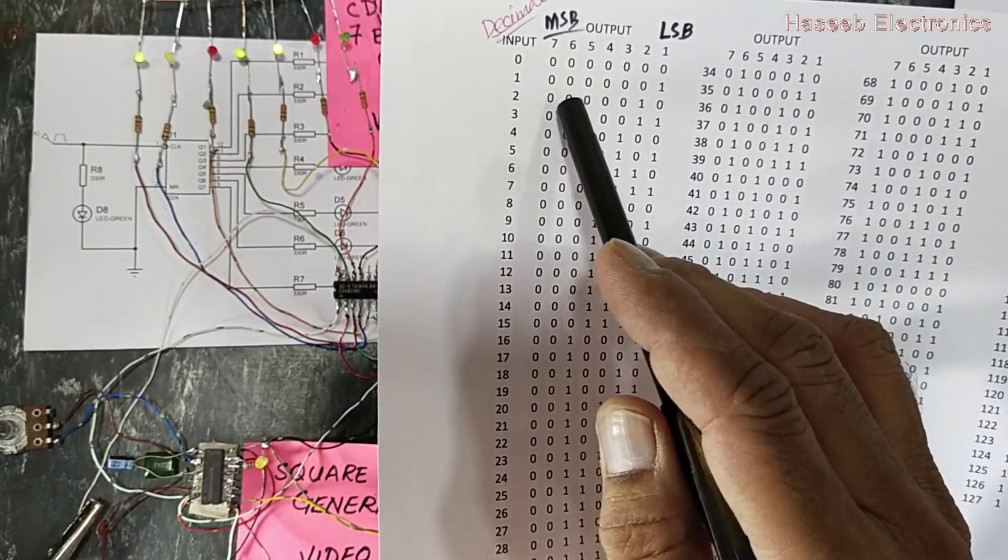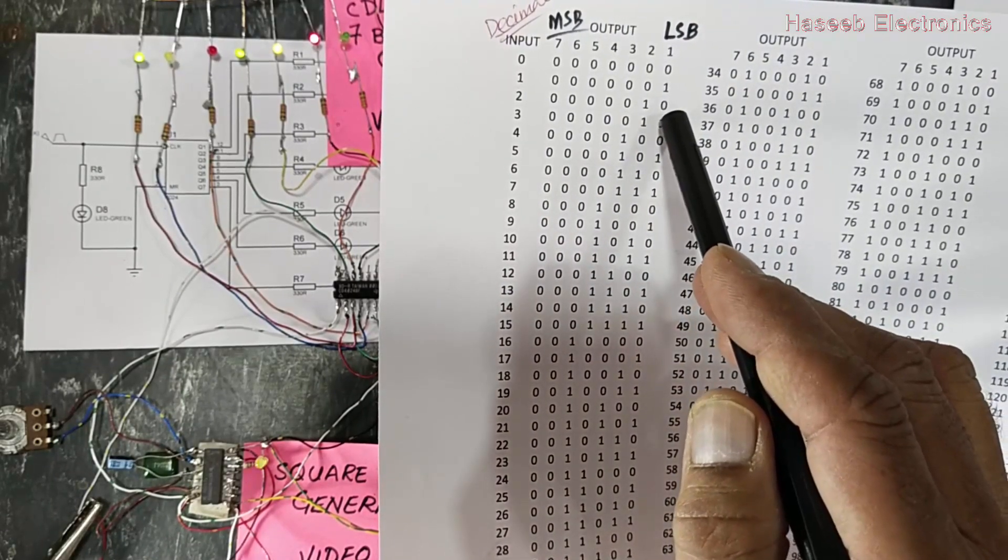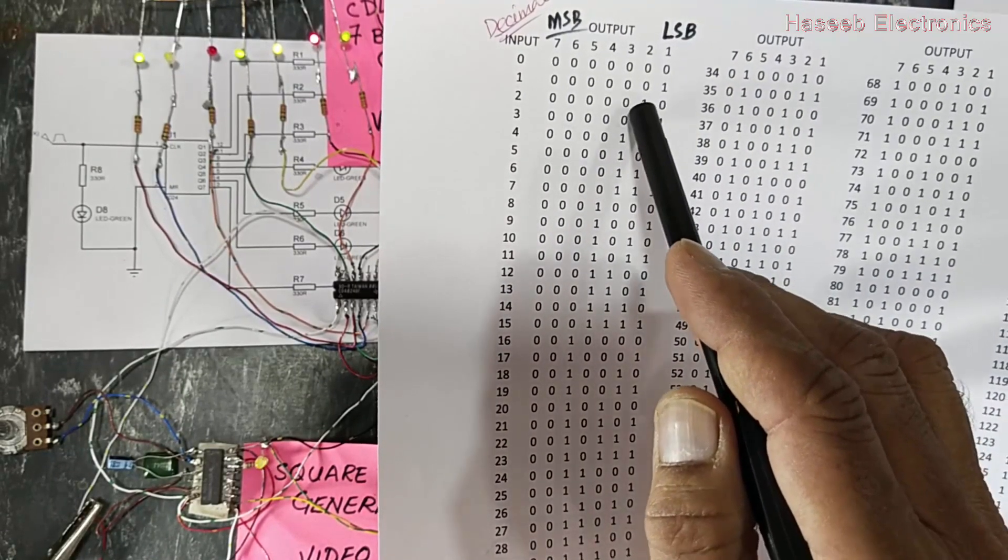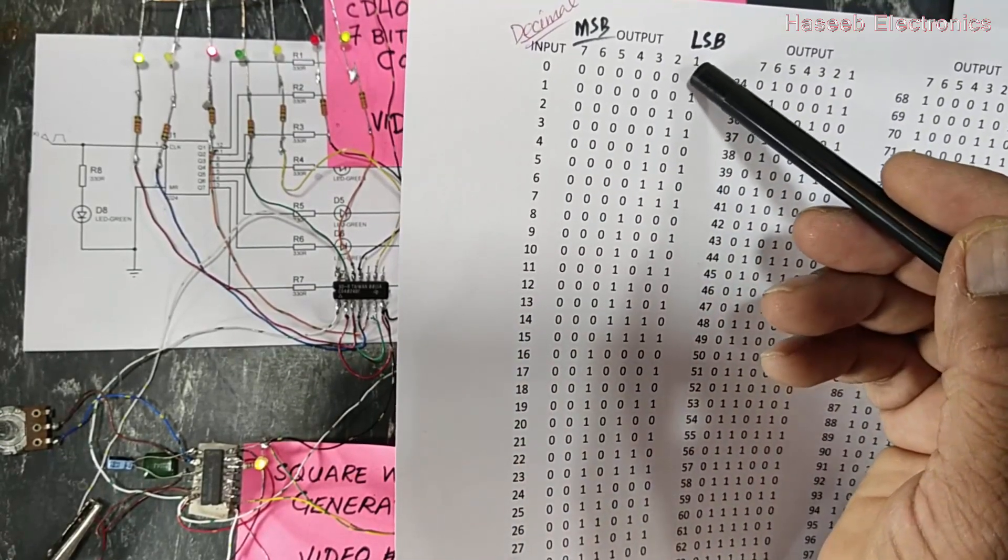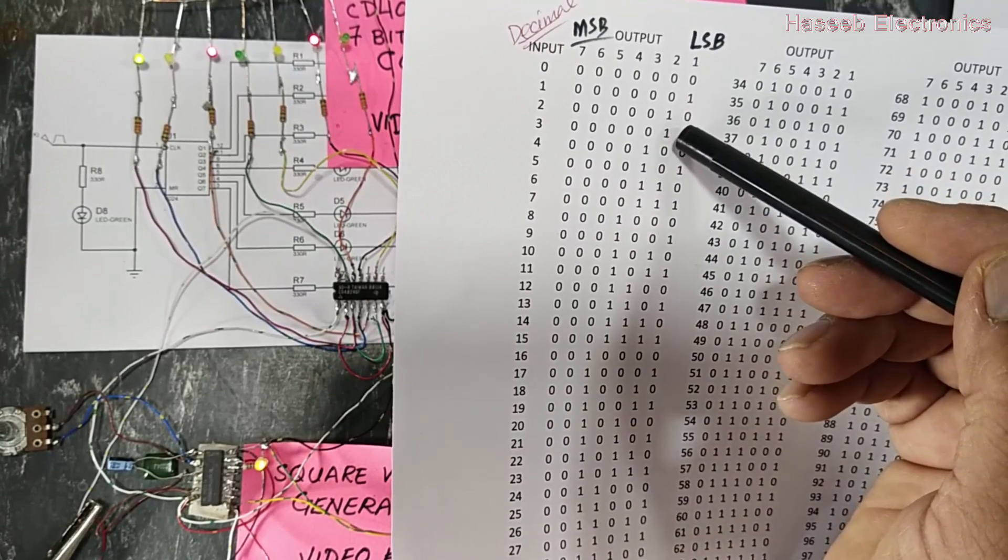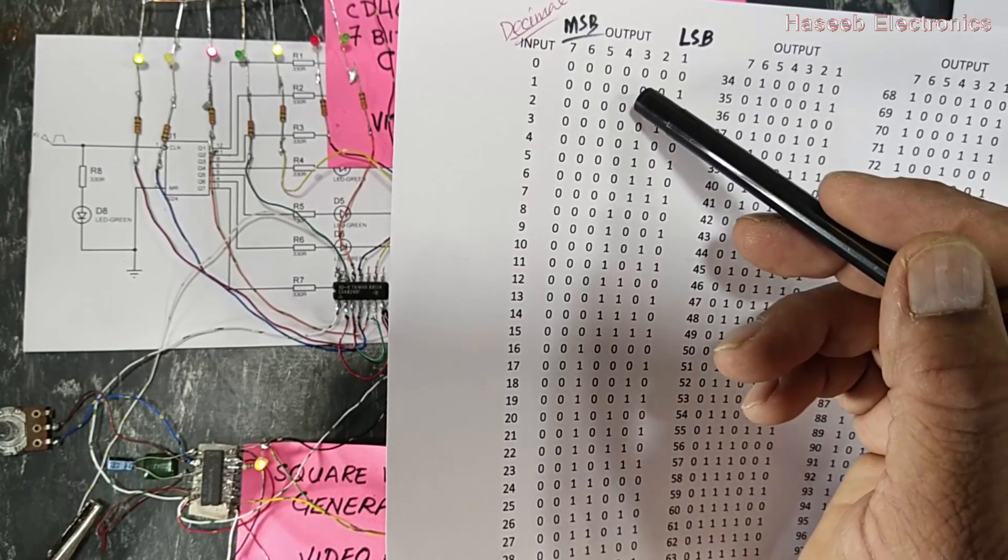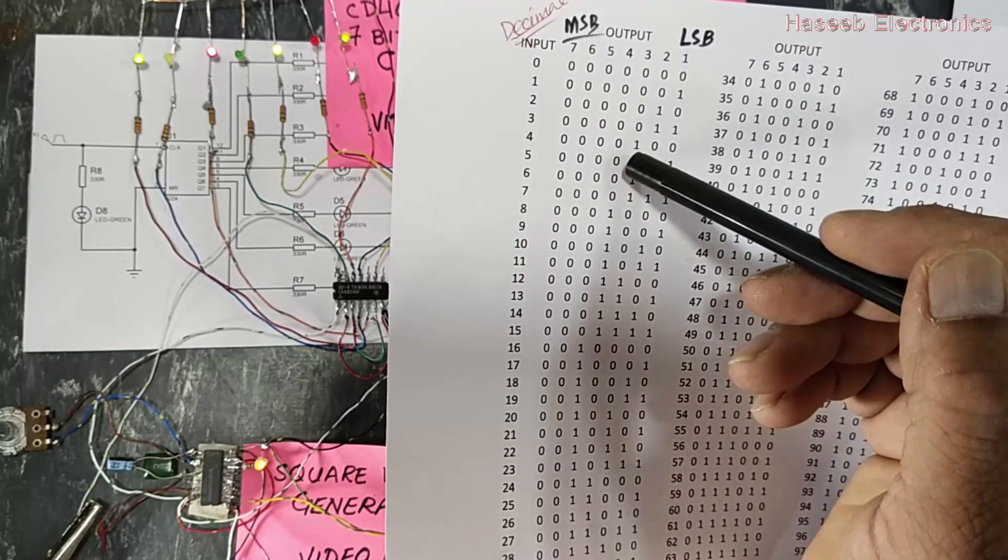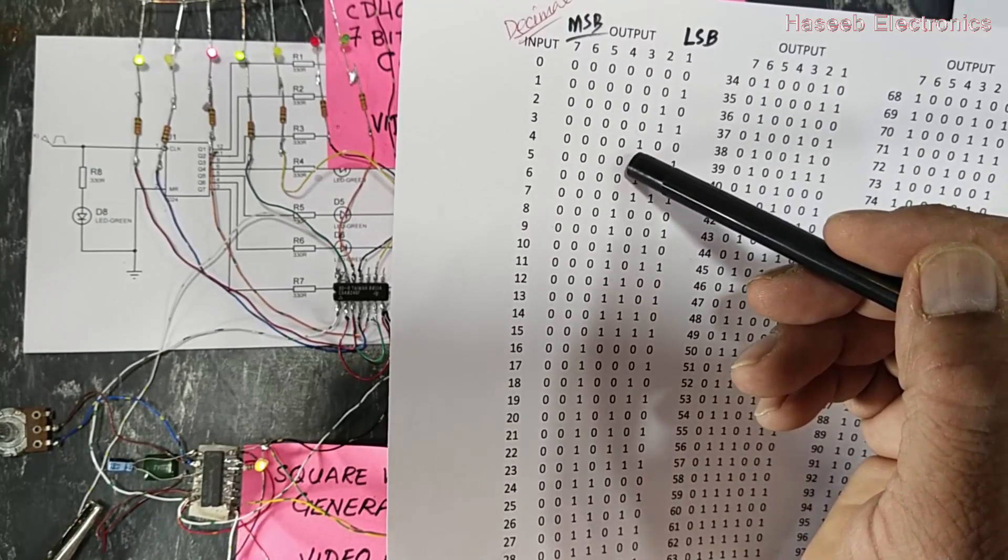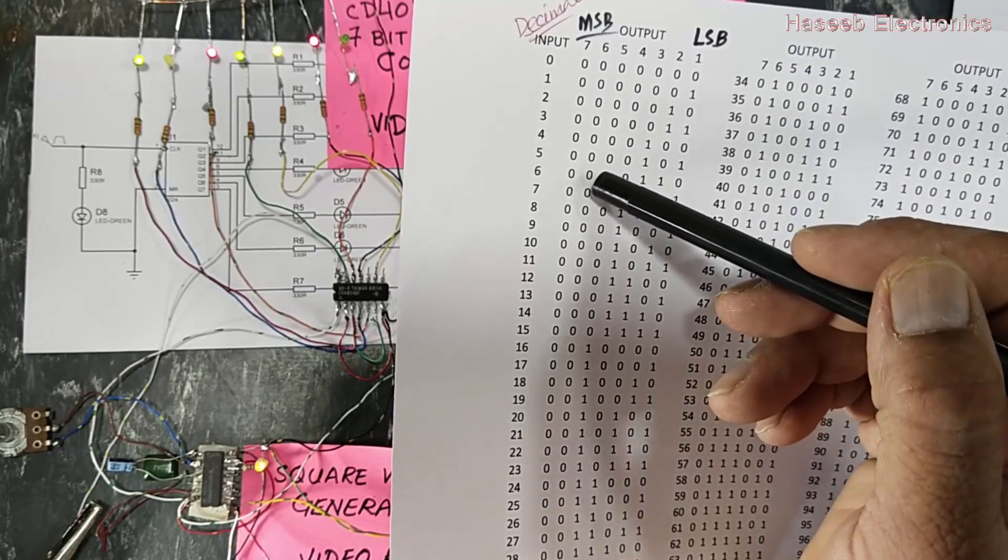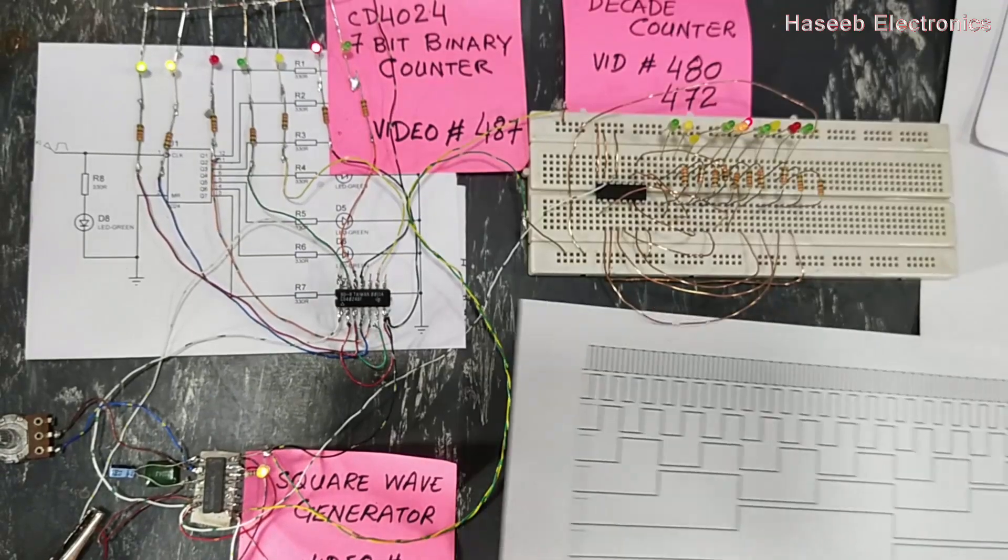At the second pulse, all outputs will be zero, just only output number two will go high, then the next pulse is zero one zero at each stage. The first stage's maximum decimal equal value is one, second stage is two, third stage its value is four, then eight, 16, 32, 64.